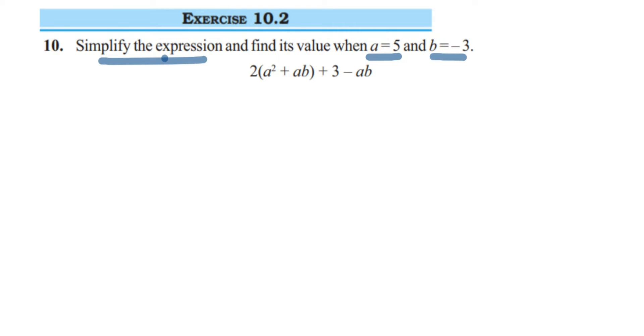The expression here is 2 into a square plus ab plus 3 minus ab. I have to simplify this first. I am going to open the brackets. 2 into a square is 2a², plus 2 into ab is 2ab, plus 3 minus ab.